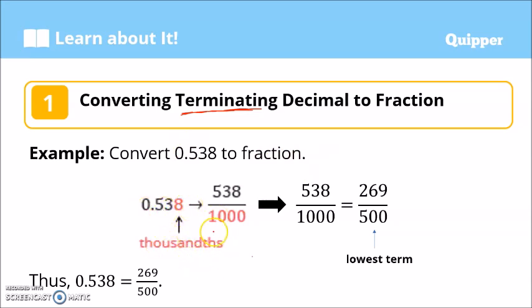When we convert this into fraction, that becomes 538. 538 over, depending on how many zeros, you place that in the denominator. That's 1 with three zeros, so that's 1,000. Express it in lowest terms. Notice that we have 538 and 1,000. They're divisible by 2. Divide by 2, you have 269 over 500. Therefore, 0.538 equals 269 over 500. This is now the fraction form of this decimal.